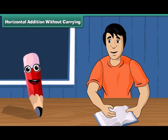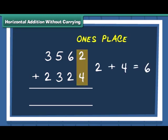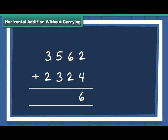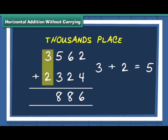Oh yes! Let me show you how to add 2 numbers horizontally. We have the 2 numbers, 3562 and 2324, which are written as shown. Now we first add numbers at 1's place. Next, we move to numbers at 10's place. Then add the numbers at 100's place, and finally the numbers at 1000's place are added.